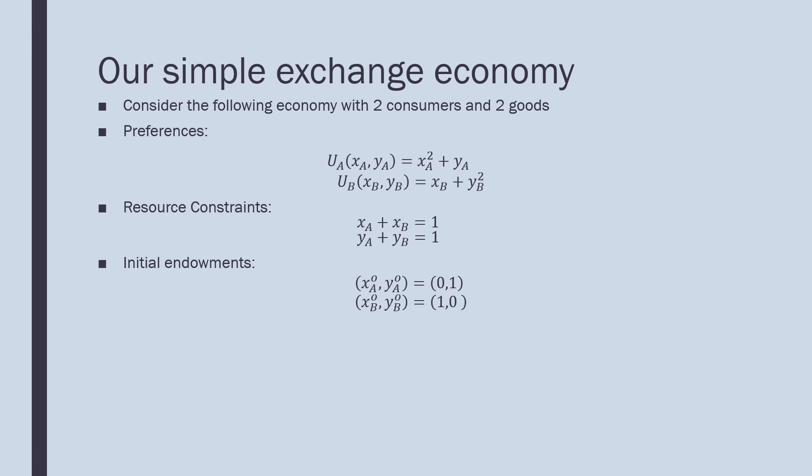Consider our simple exchange economy where we have two consumers and two goods. Our preferences for consumers A and B are both quasi-linear. However, for consumer A, good X enters in a squared manner and good Y enters linearly. For consumer B, it's the other way around.